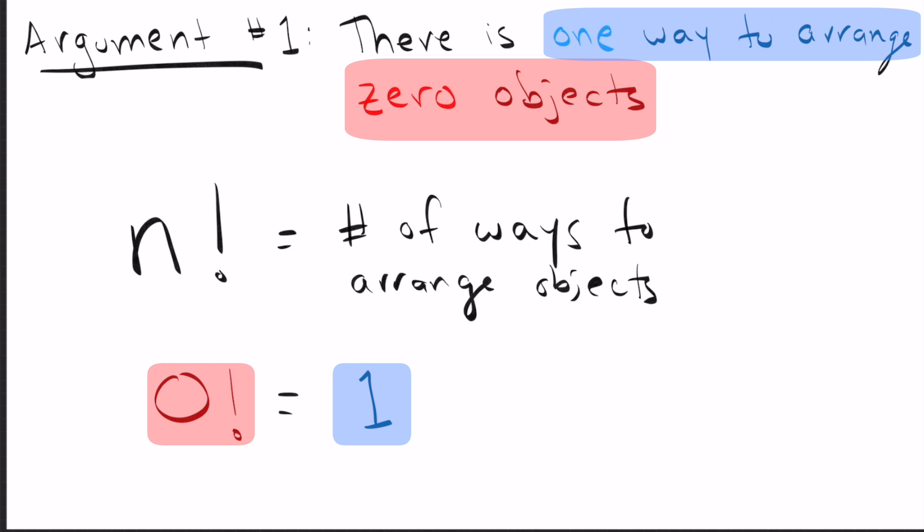While you may or may not be in agreement with that there's one way to arrange 0 objects, it doesn't change the fact that it's not being proved mathematically. It's just saying a logical thing that I think there's one way to arrange them, and another person could say I think there are 0 ways to arrange them. If we're going to define it mathematically, we want it to be shown by the rules of math, which argument 1 really just doesn't do.